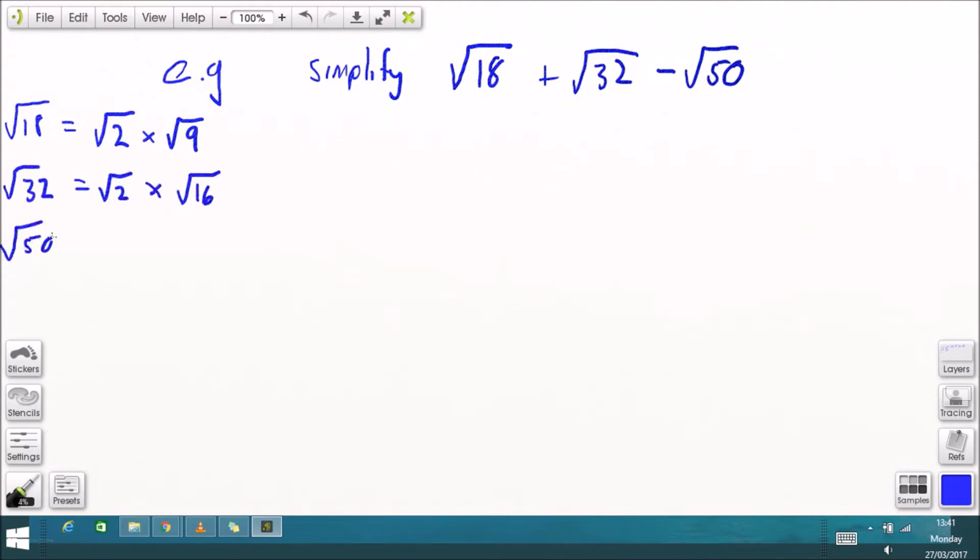So for example if I wanted to simplify this expression here root 18 plus root 32 minus root 50 I can break down each of these individual surds into these two parts and I've got a common root 2 as a factor of each of those